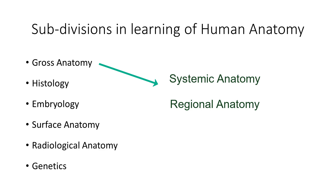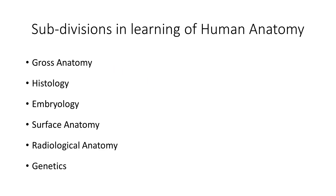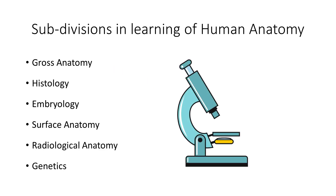In regional anatomy, a particular region is taken — such as a limb, thorax, abdomen, pelvis, head, or neck — and all the systems involved in that region are studied at one time. During normal routine dissections, we follow this regional anatomy. Microscopic anatomy is histology, where different tissues of the human body are studied under the microscope.